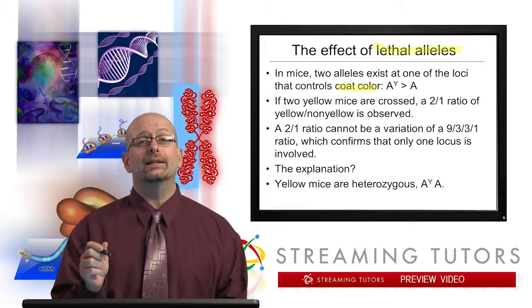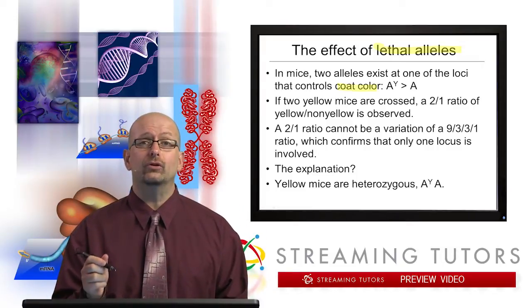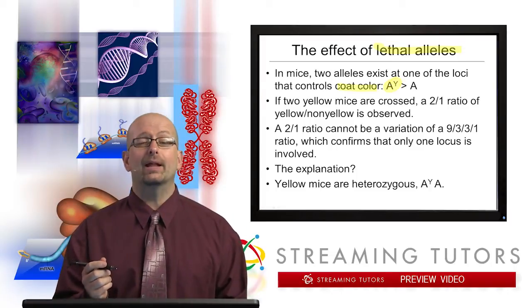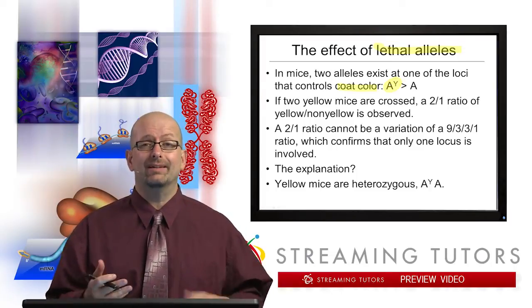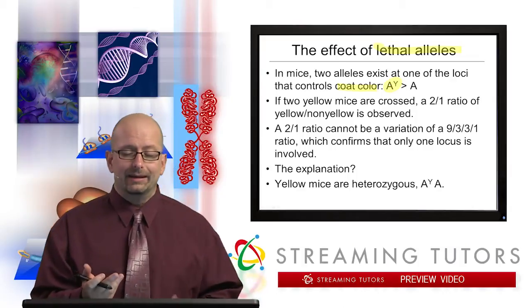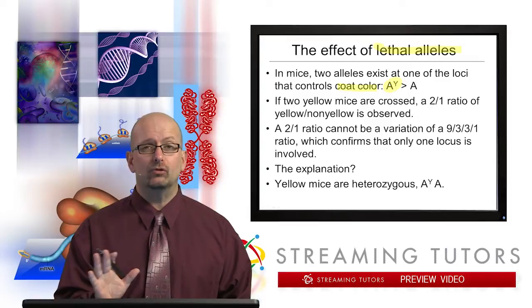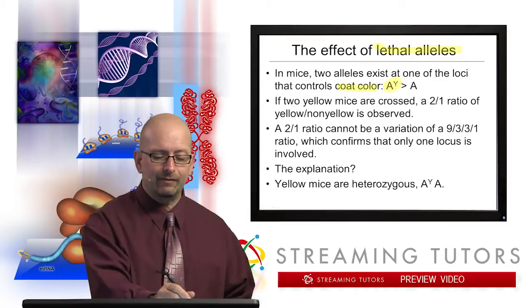So an allele was discovered that was actually dominant to agouti, and they called it capital A capital Y to give the idea that it was dominant. Now it caused a yellow coat color—at least this is the preliminary story—and it turned out that if